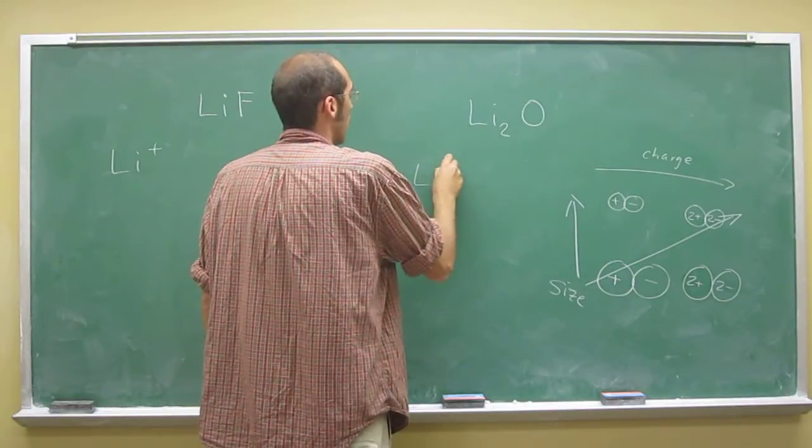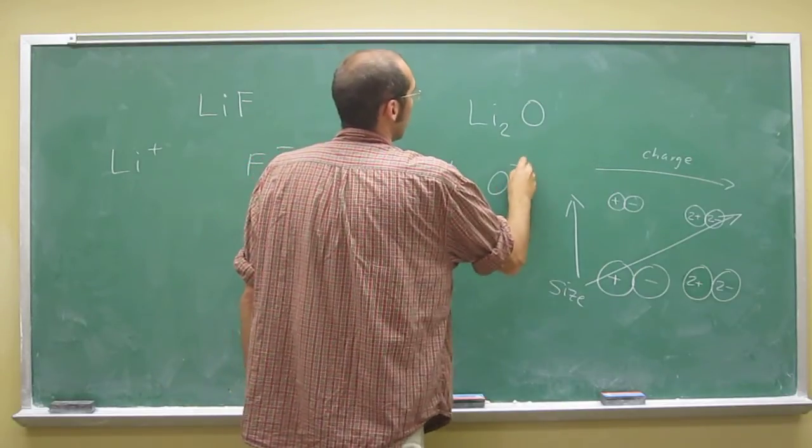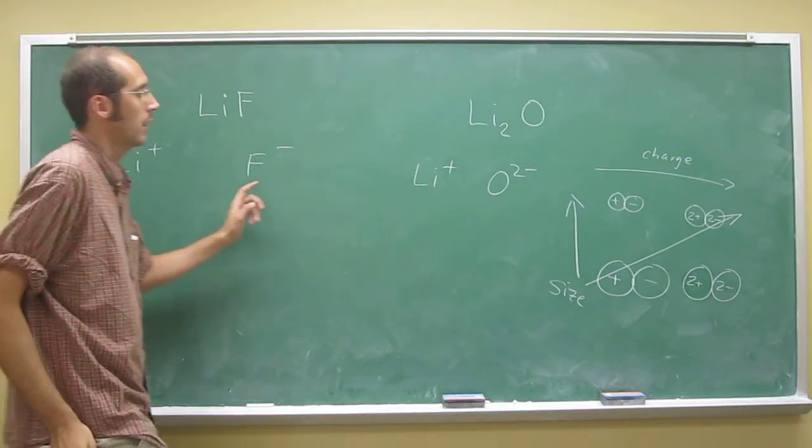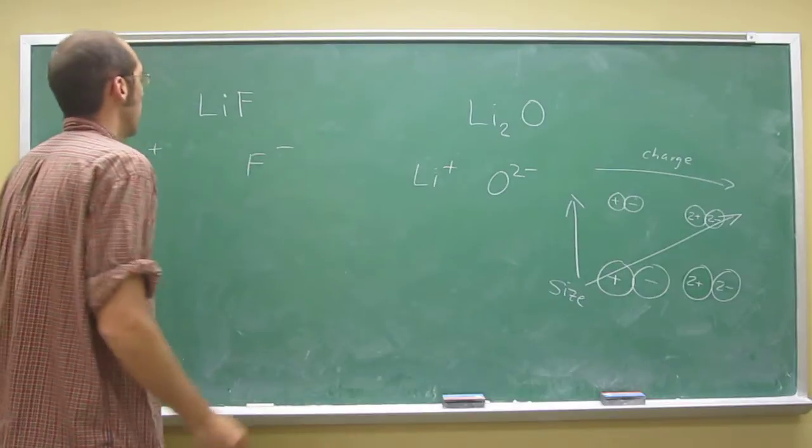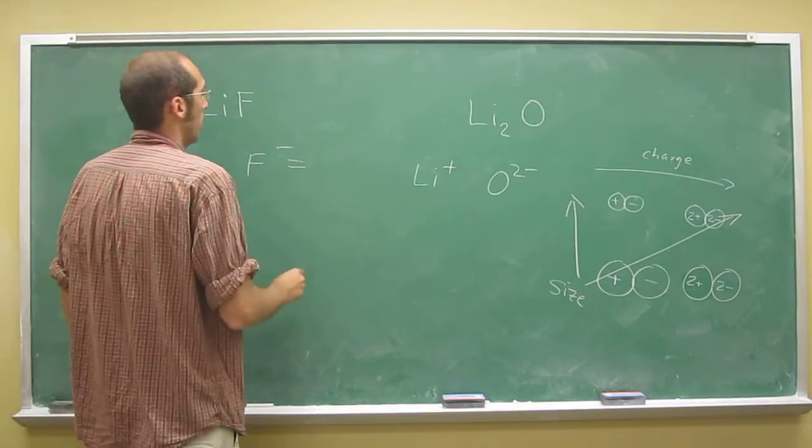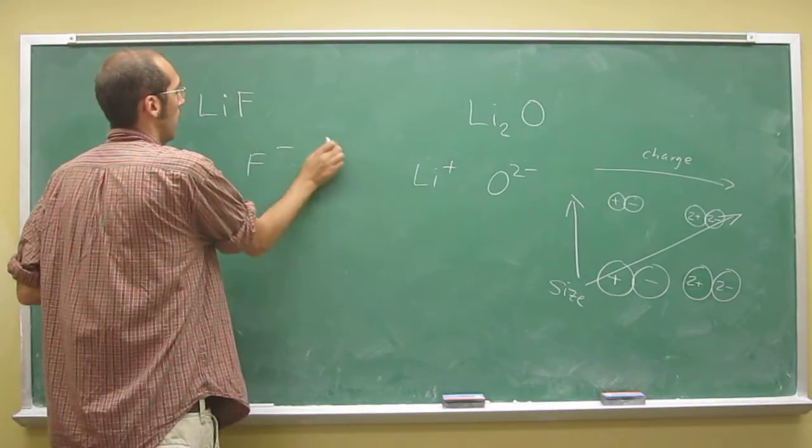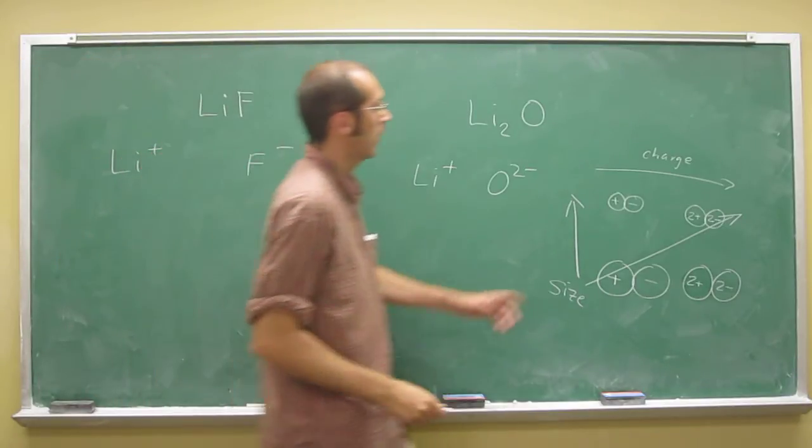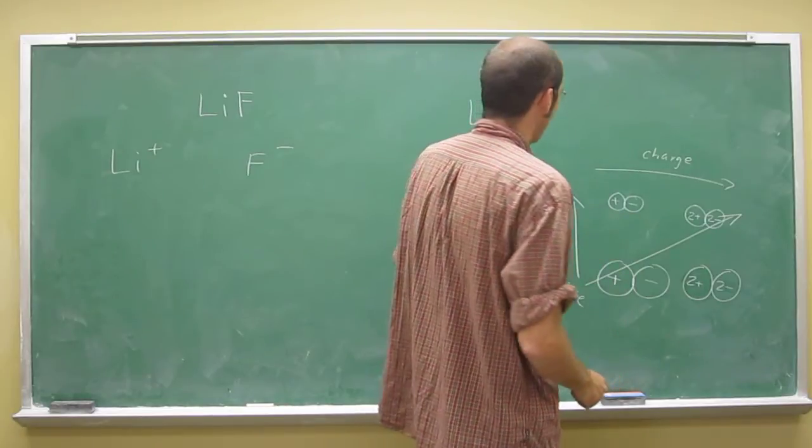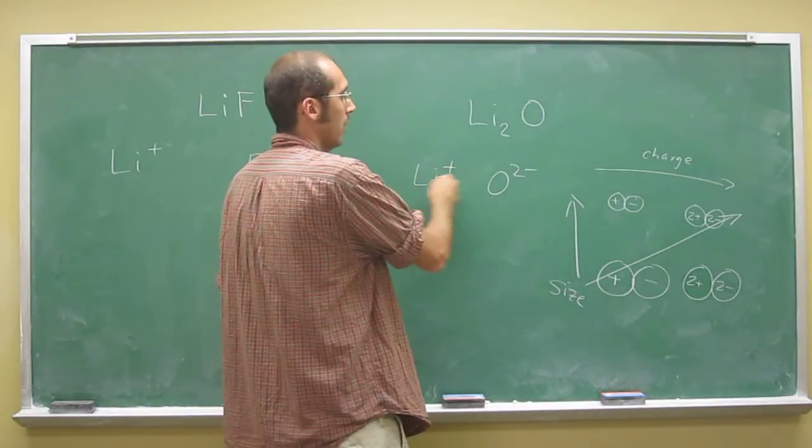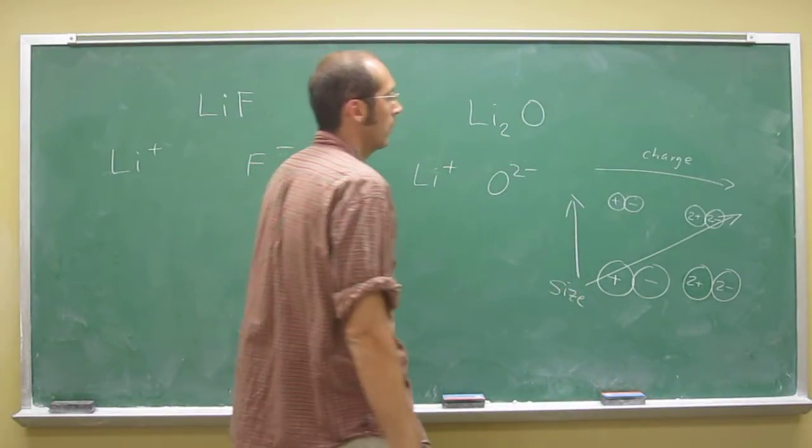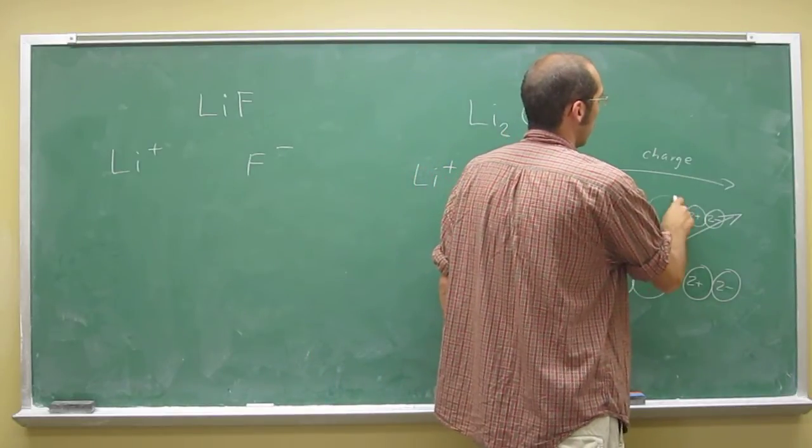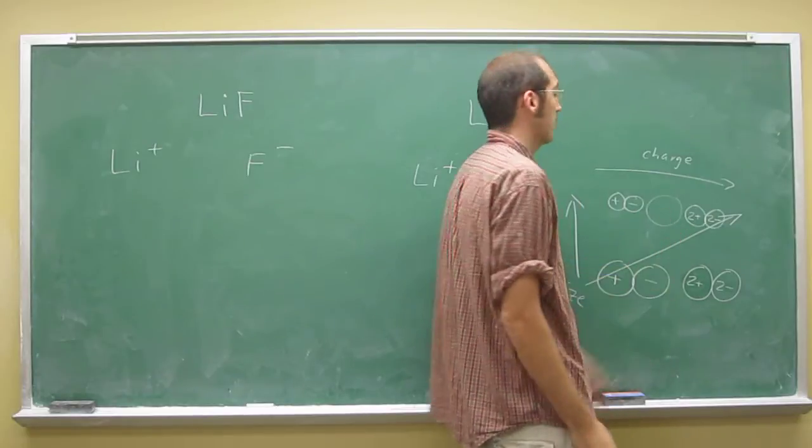It's really easy to compare. We've got Li plus and O2 minus here. So what we're really doing is comparing the amount of charge. Here we've got an overall one and one charge, and here we've got a plus one and a minus two. So the overall charge is somewhere in the middle for lithium oxide.